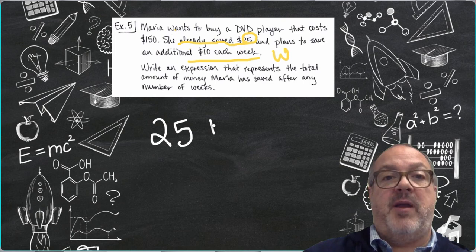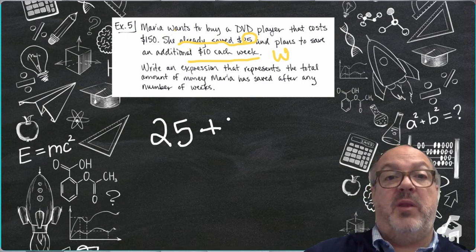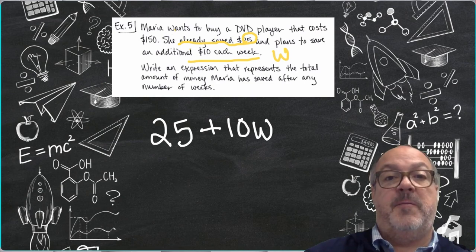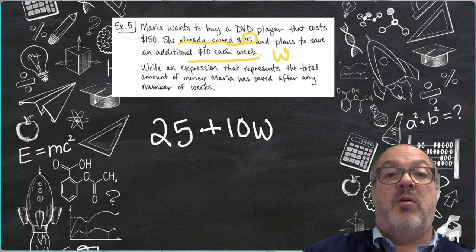So I can continue with my expression by saying 25 plus 10, which is going to be $10, times the number of weeks. And that is my expression for this example.